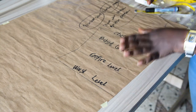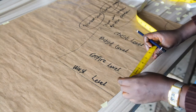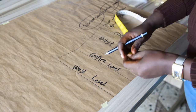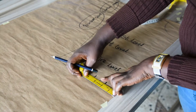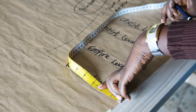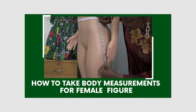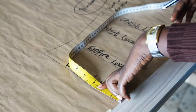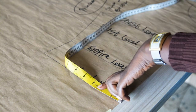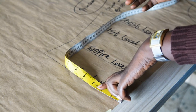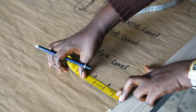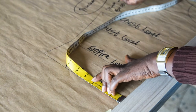The first step is to plot the dart. If you don't get the plotting of your dart correctly, your bustier will not come out well. I will come to the waist level and insert the ball span measurement. The ball span measurement is the measurement taken from one nipple to another. I have a well-detailed video on how to take measurements for a female figure. The ball span measurement I am using is 7 inches — half of that is 3.5 inches.